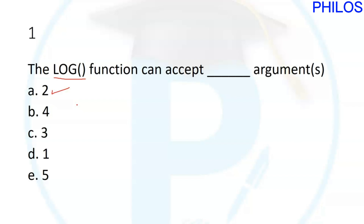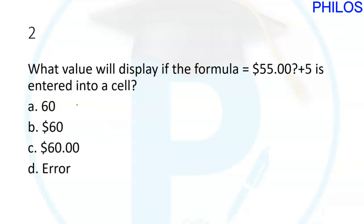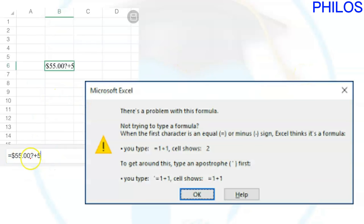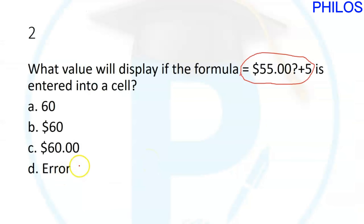Question two says: what value would display if the formula equals dollar 55.00 question mark plus five is entered into a cell? When I enter that in a cell and click enter, it says there's a problem with this formula. So the answer is D: error. If it were equals 55 plus 5, the answer would have been 60.